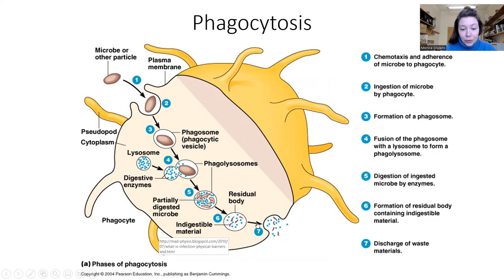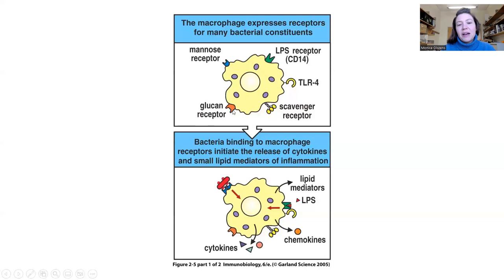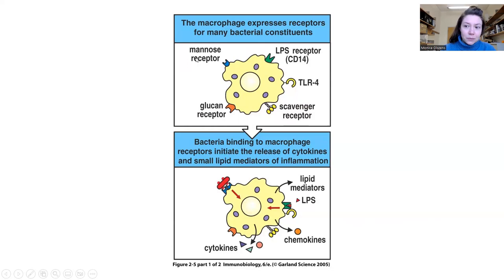Some of it gets removed from the macrophage body and then some of it will get placed on the outside surface. This shows what a variety of proteins are on the outside of a macrophage — this is just about 1% of what would really be there. They can recognize mannose, which is a sugar found in bacteria. They can recognize glucan, similar process. There are scavenger receptors, receptors for lipopolysaccharide, which is the outside of bacteria. There's also TLR4 — another receptor for the outside of bacteria.